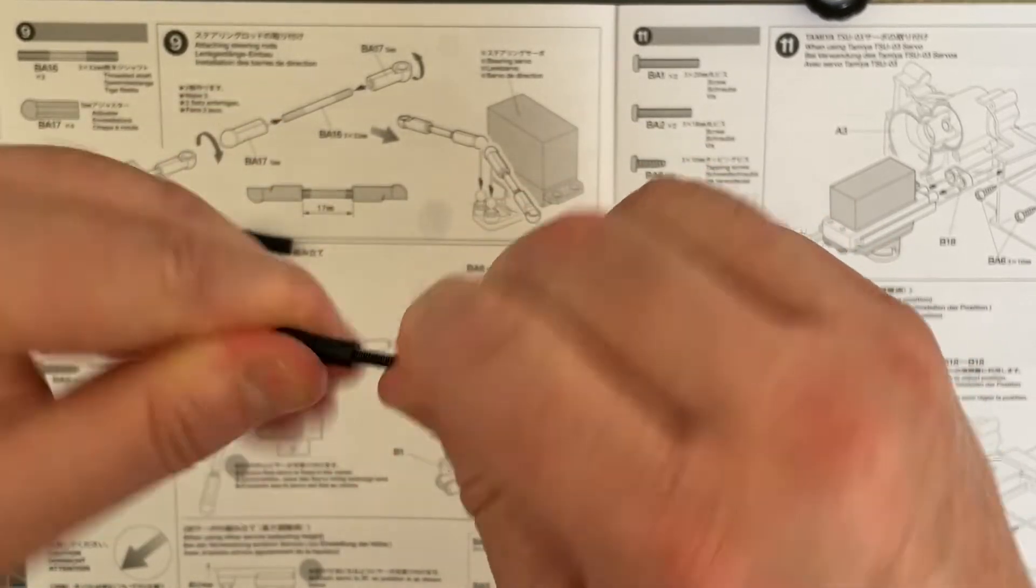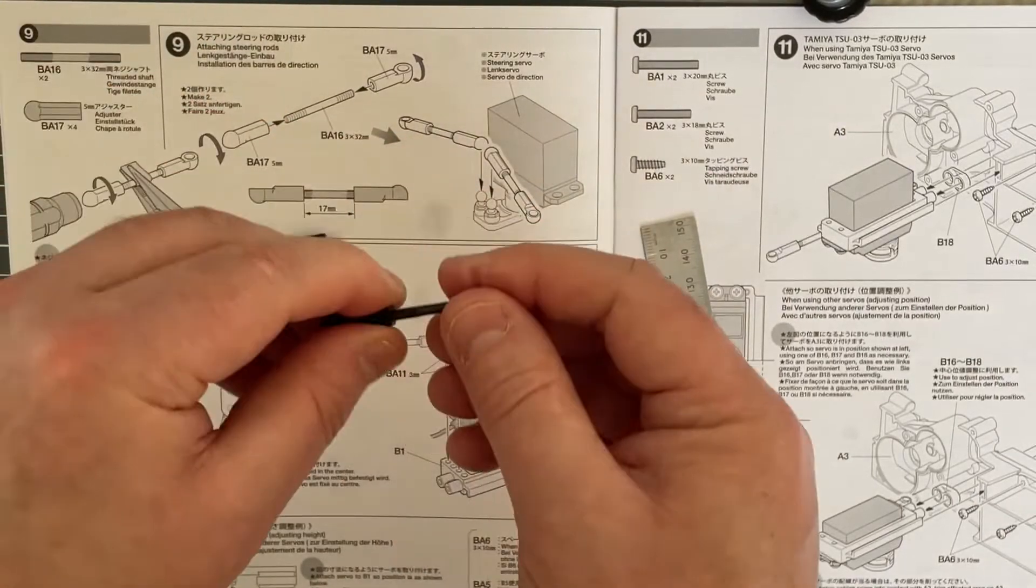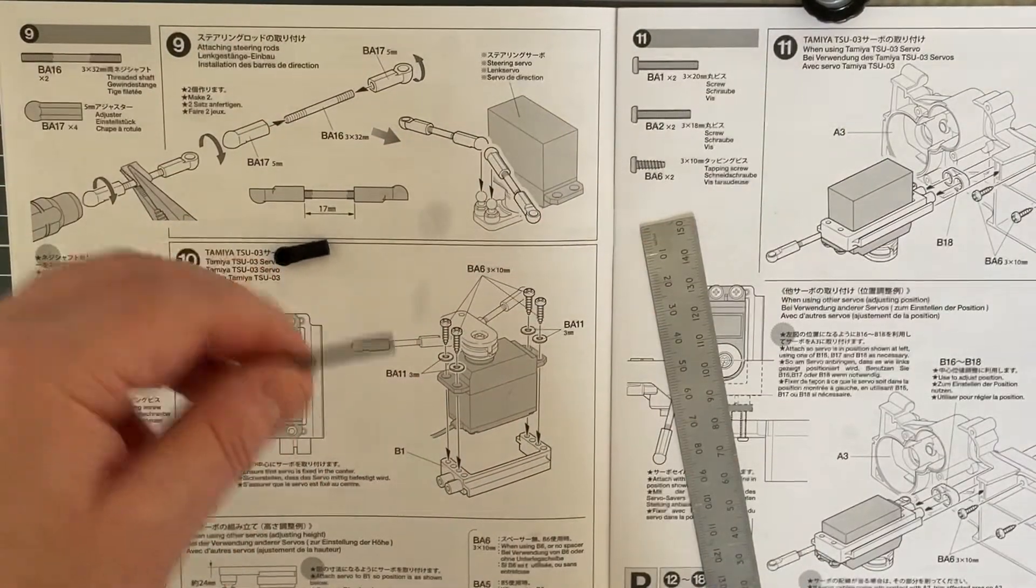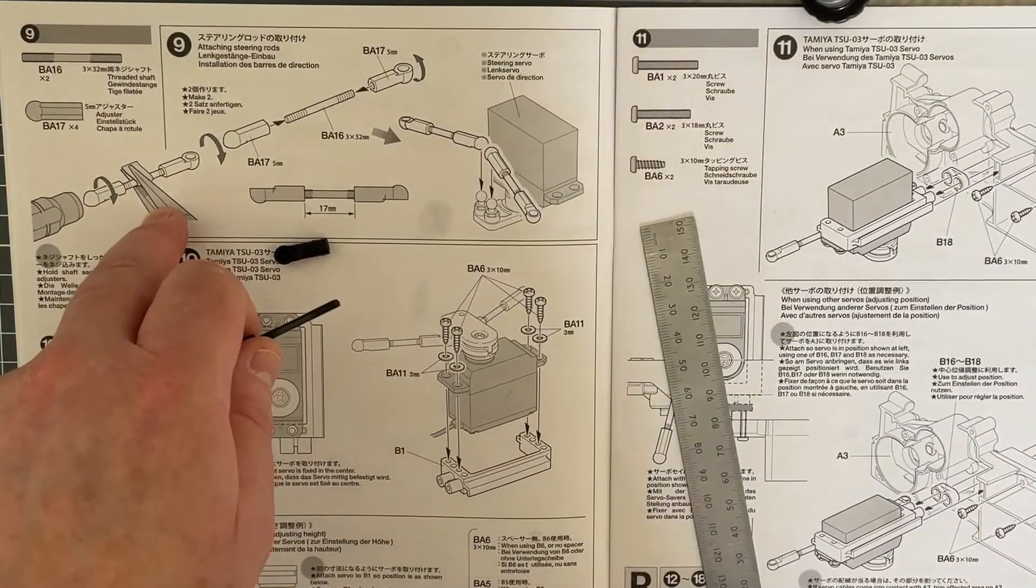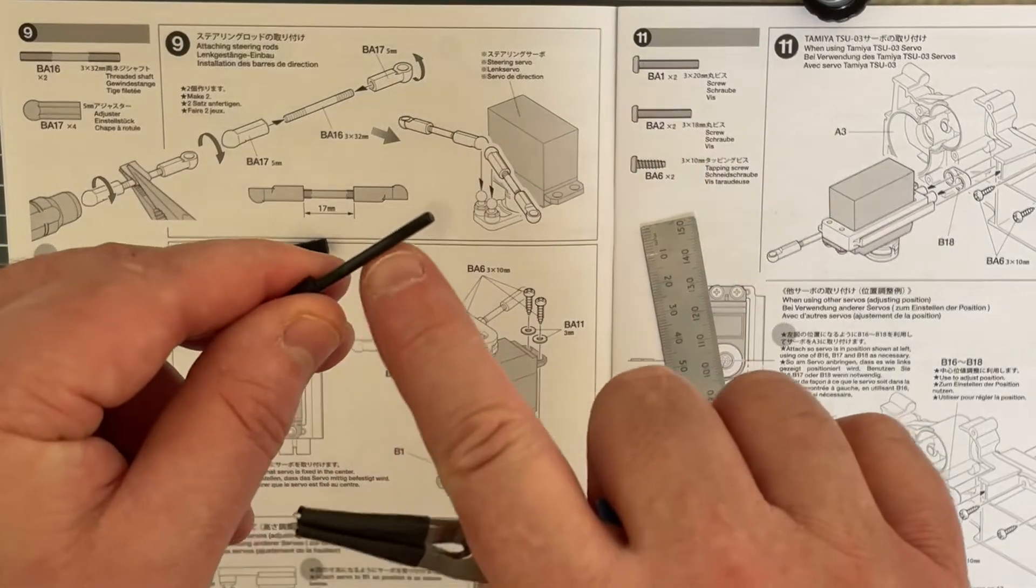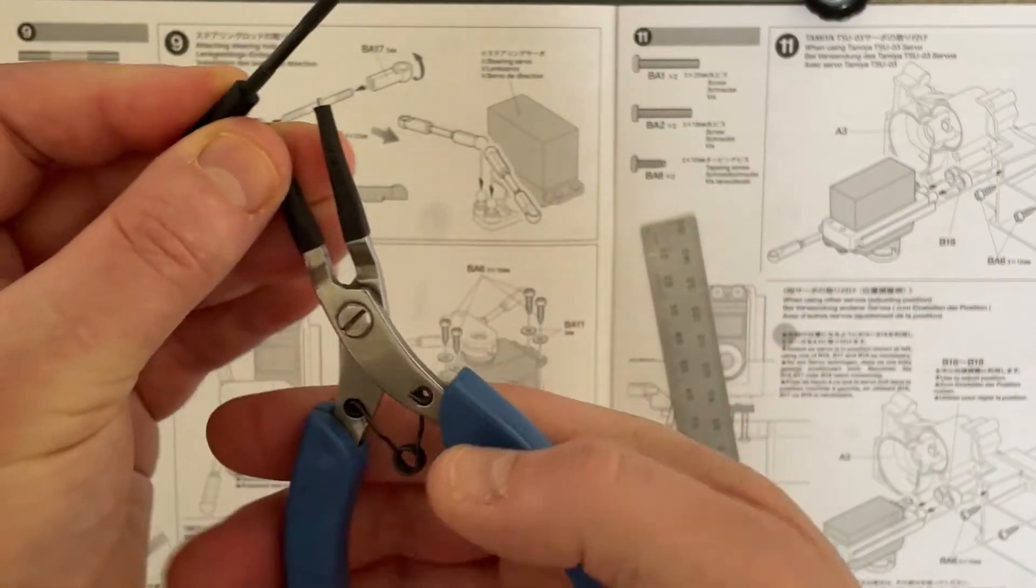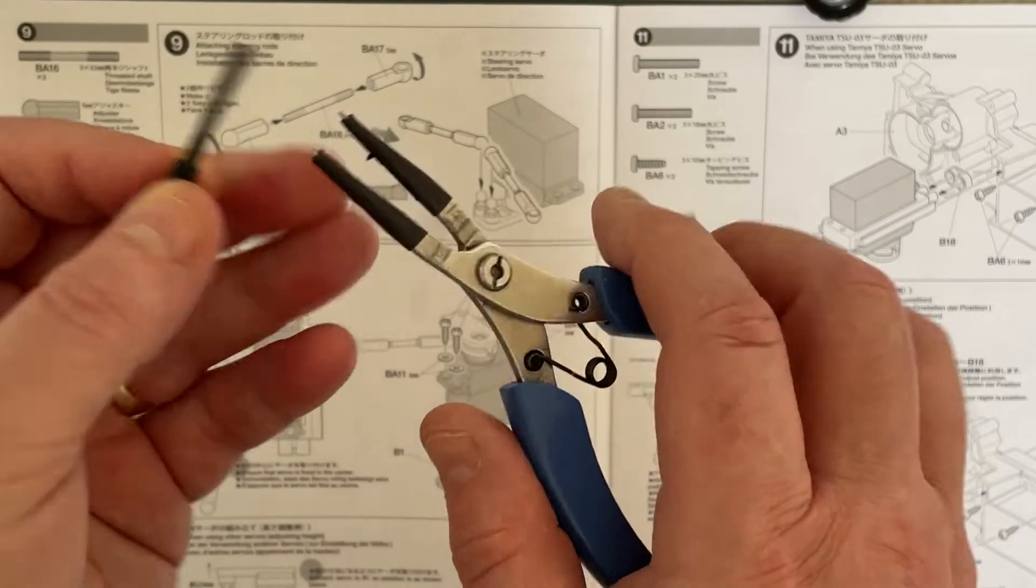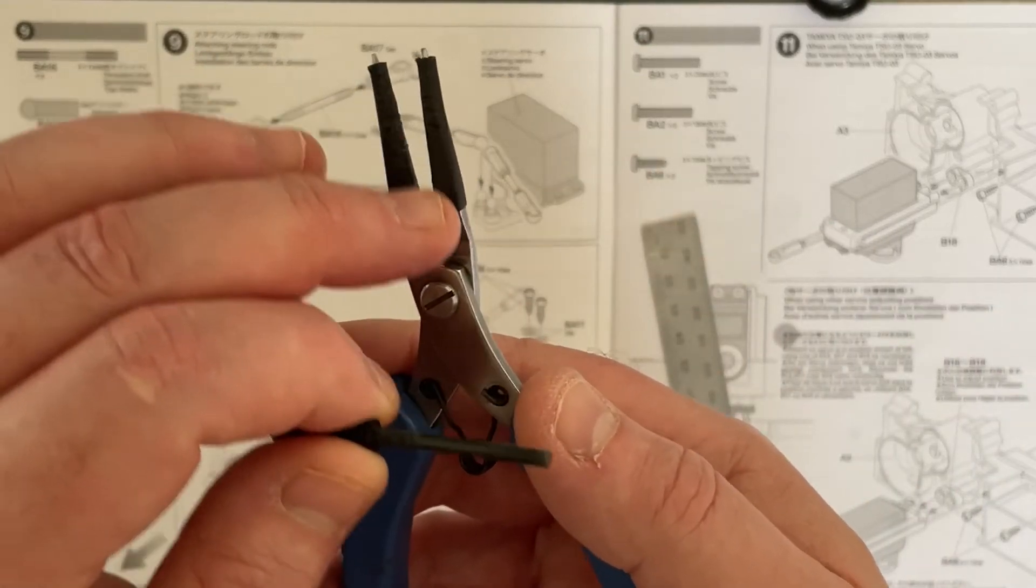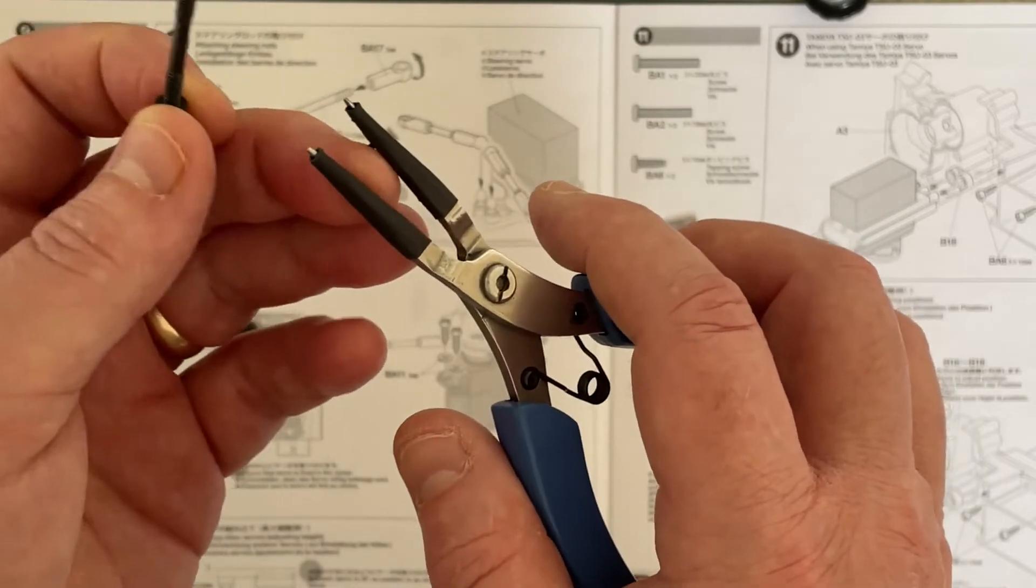The instructions say to use a pair of pliers carefully on the shaft so you don't damage it. I'm using electronic pliers - they're not particularly strong, but they've got a little bit of heat shrinking around them to try and make it so it's not metal on metal.